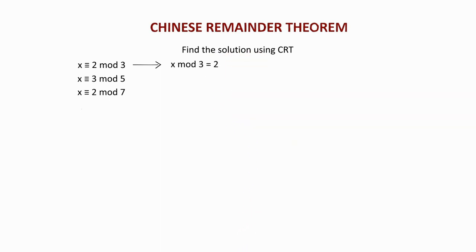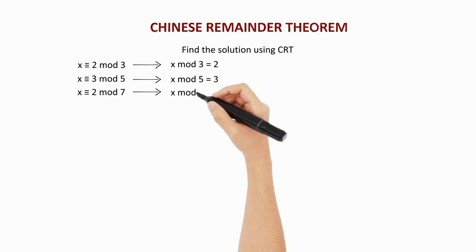Now, x is congruent to 3 mod 5 can be written as x mod 5 equals 3. And x is congruent to 2 mod 7 can be written as x mod 7 equals 2.